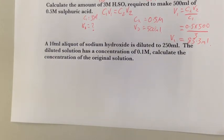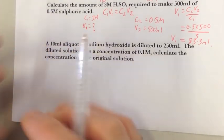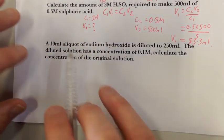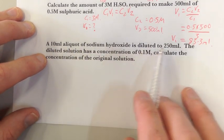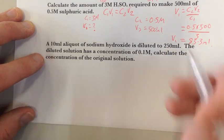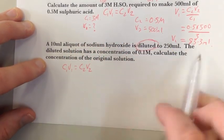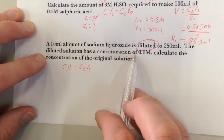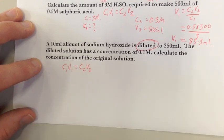This is more of a practical question, what might actually happen in a question that you're dealing with in a lab. What we have is a 10 mil aliquot, and aliquot is just simply an amount, a little sample. So a 10 mil sample aliquot of sodium hydroxide is diluted to 250 mil. Obviously diluted, that means C1V1 equals C2V2. The diluted solution has a concentration of, or found to have a concentration of 0.1 molar. Calculate the concentration of the original solution.